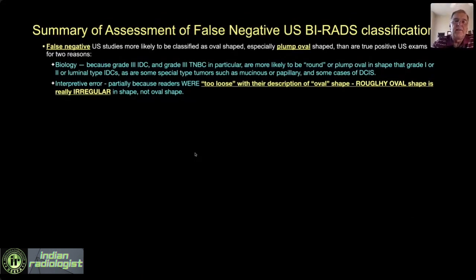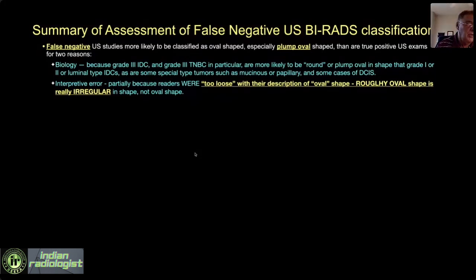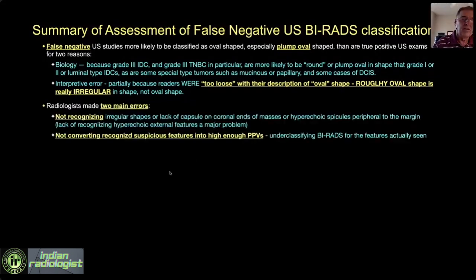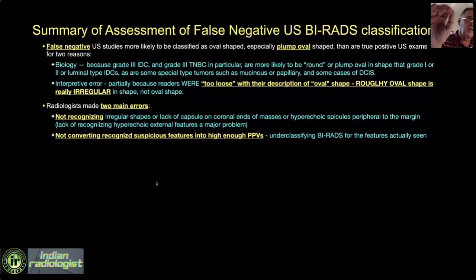In summary, false negative ultrasound studies are more likely to be classified as oval-shaped, especially plump oval, than true positive exams. Part of that is biology — grade 3 tumors, triple negatives, some mucinous and papillary cancers may look that way. But the biggest component is interpretive error: people are way too loose on what they call oval-shaped. Roughly oval is really irregular and should be called irregular. Radiologists are not looking at the sides of the lesion, and invasion occurs in the path of low resistance — the tissue planes on the sides.